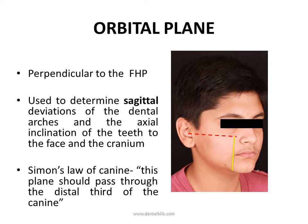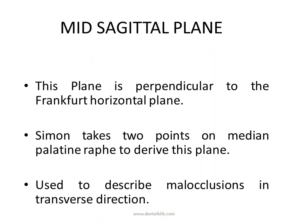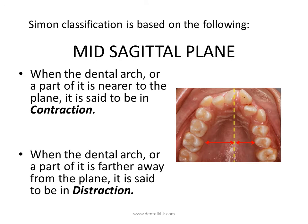The Orbital Plane is perpendicular to the eye-ear plane at the margin of the bony orbit directly under the pupil of the eye. This plane is used to determine sagittal deviations of the dental arches and the axial inclination of the teeth to the face and cranium.